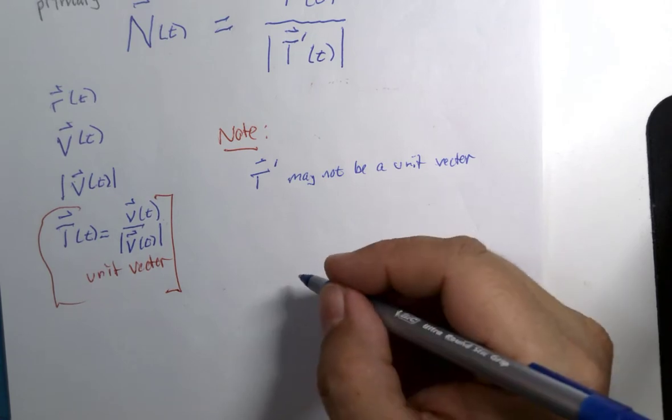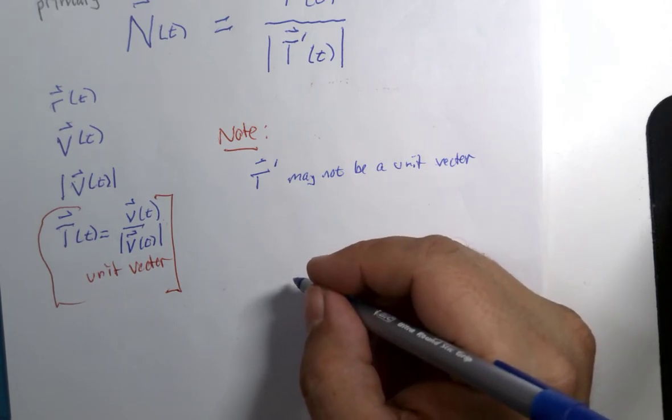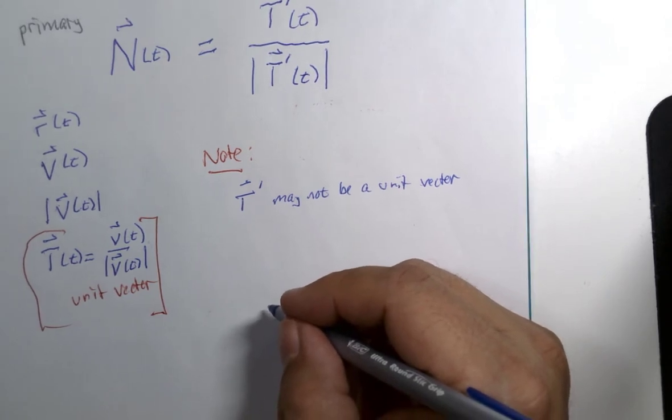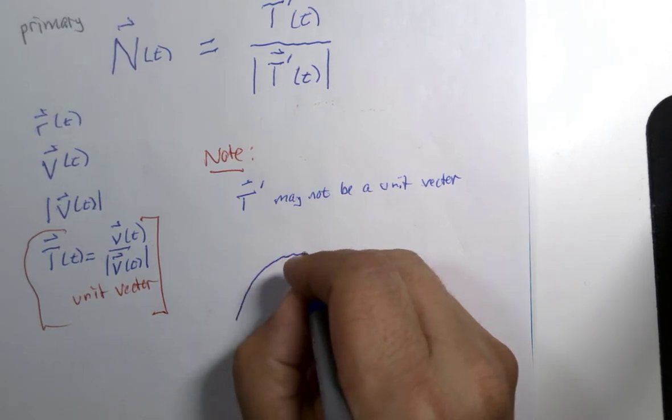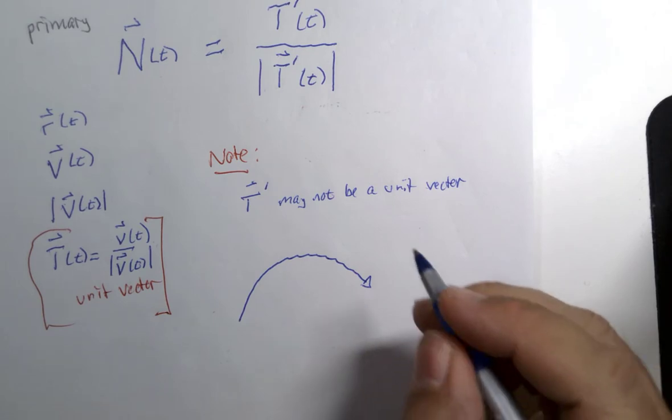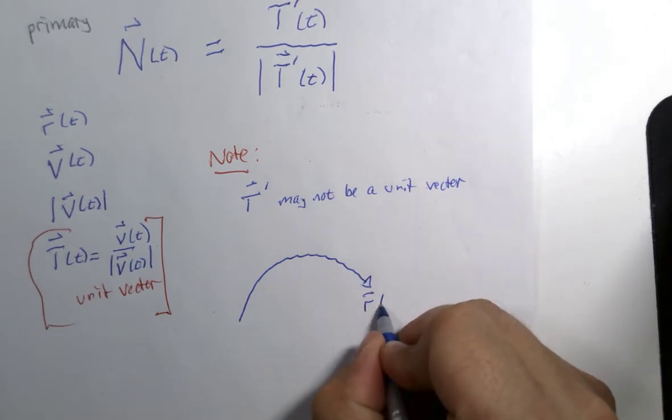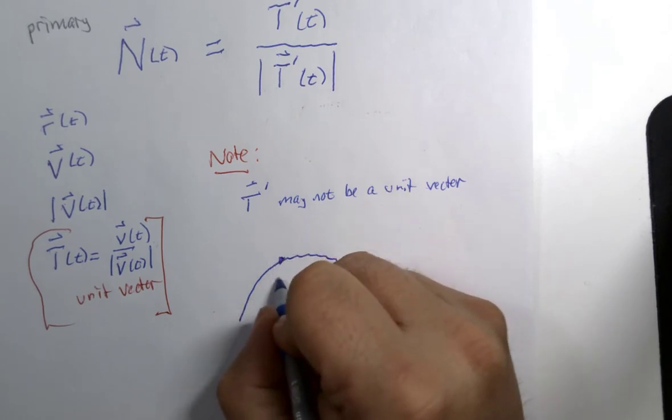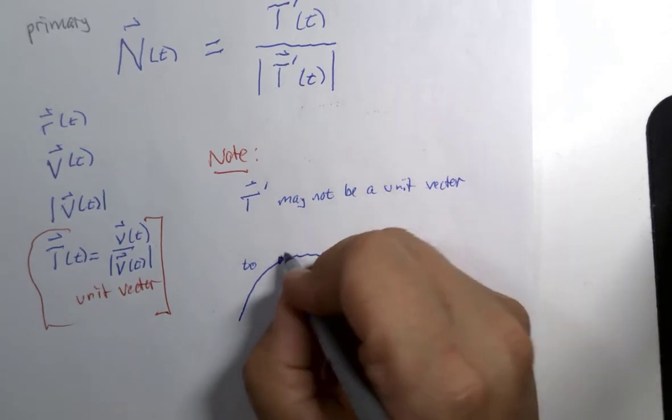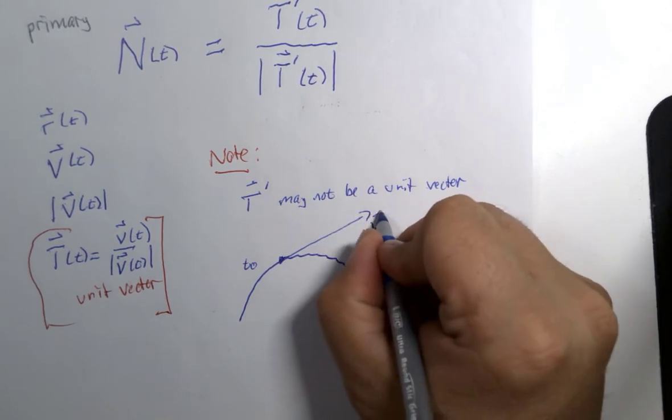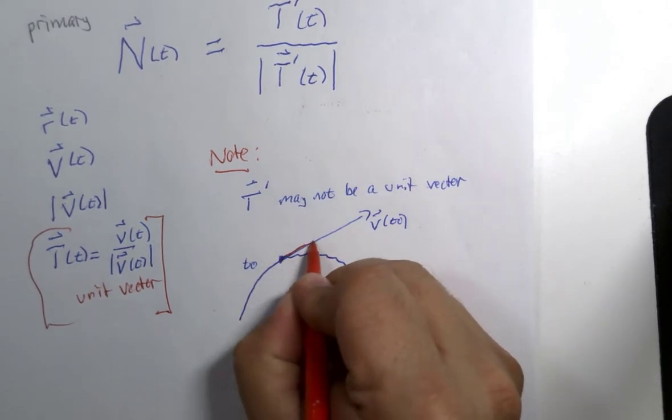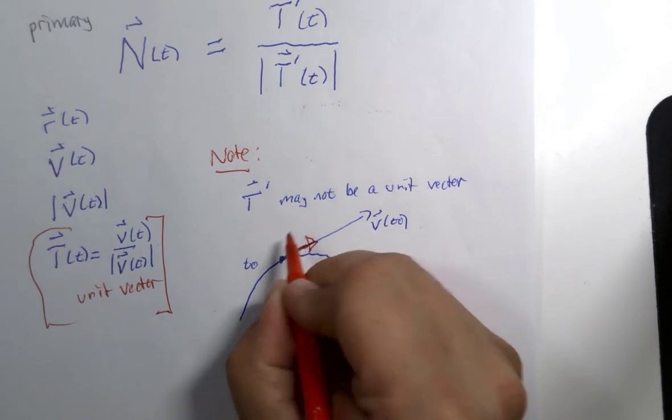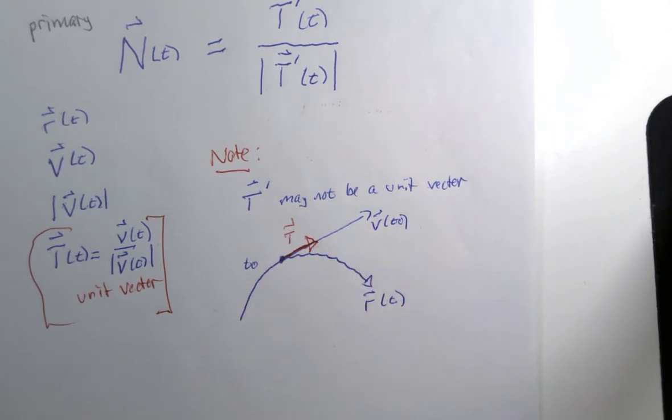For the second note, what I'd like to do is show you a visual that kind of points out what we're heading towards. So we have a curve. I've used a similar curve before. This would be R of T. And we have at a point T0 some velocity vector, the velocity at T0. And if we make that a unit vector, we would call that capital T at that point.